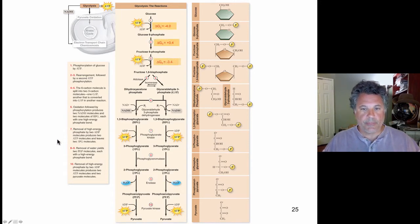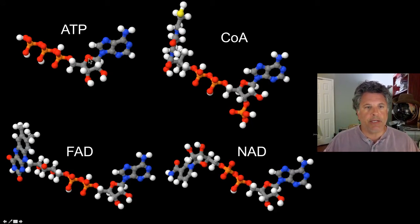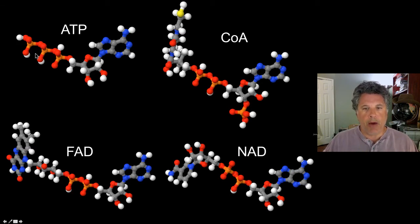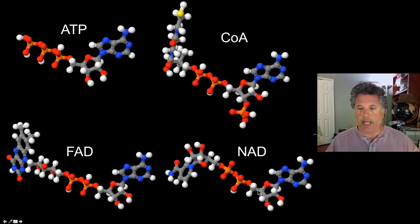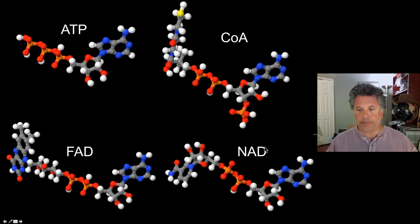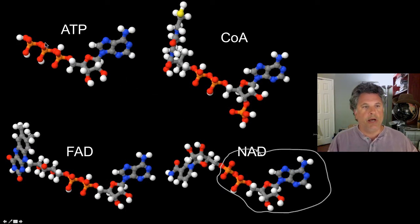Before we do that, I'd like to introduce some of the key players, some of which you've already seen. Of course you're familiar with ATP — here's adenine, here's the ribosugar, and here are the three phosphates, the breaking off of one of which releases energy that can power catalysis. So ATP is the energy currency molecule of the cell. And here we have NAD, which you've seen in glycolysis accepting two electrons and a proton to become NADH. You'll note that NAD basically has the root of ATP, which is ADP.